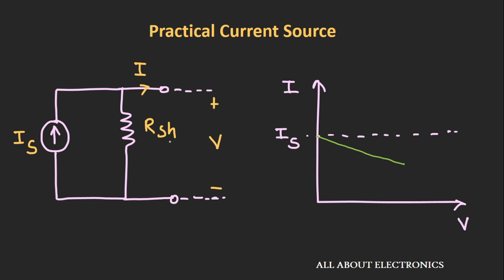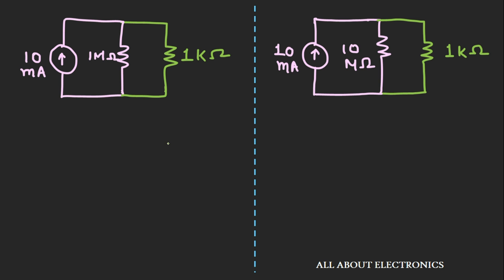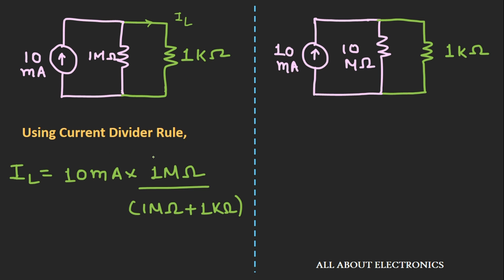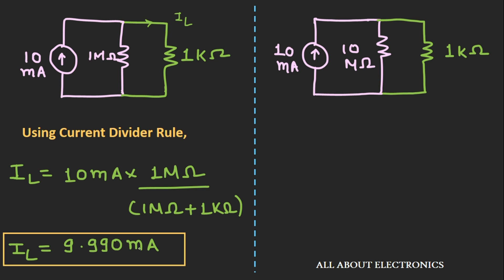Now let's see through an example how the value of this shunt resistance affects the output current. Here we have two current sources with the same value of current but with different values of shunt resistance. These two current sources are connected with the same load of 1 kΩ. The current flowing through this 1 kΩ load can be given using the current divider rule as 10 mA × 1 MΩ / (1 MΩ + 1 kΩ), and the current IL flowing through the load resistance will be 9.990 mA.